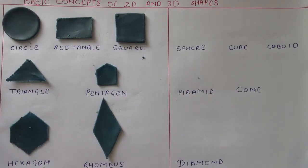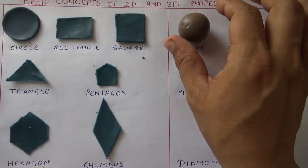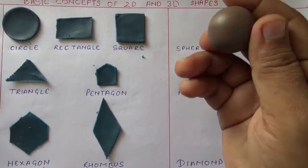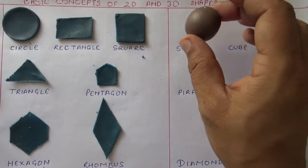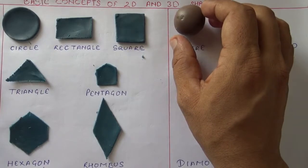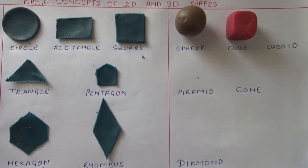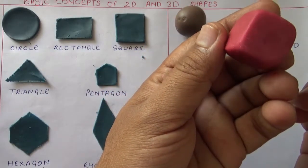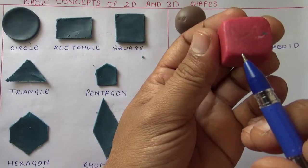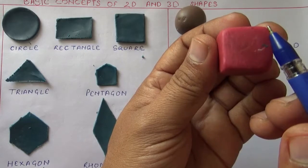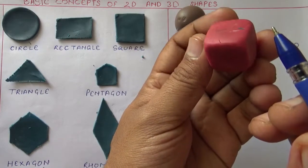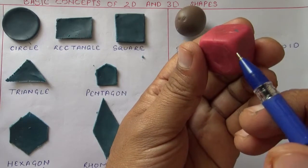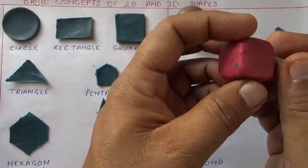Now let's see three-dimensional shapes. Sphere — a three-dimensional shape. In a two-dimensional shape there is only length and breadth, but in a three-dimensional shape we can see length, breadth, and height or depth.